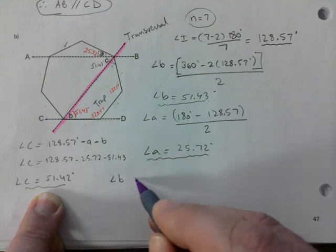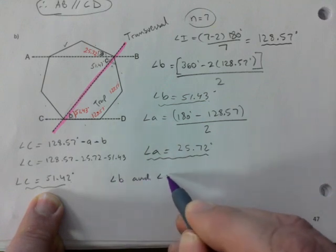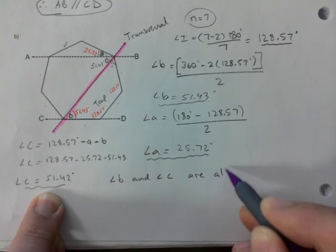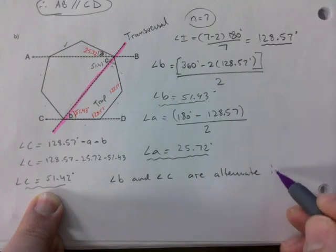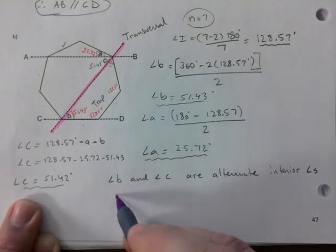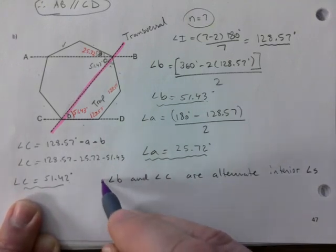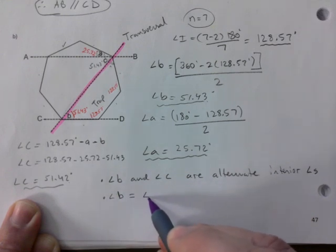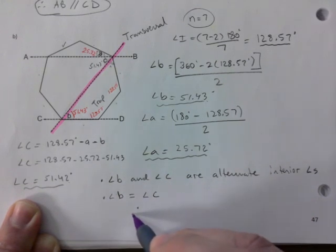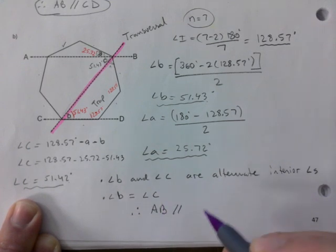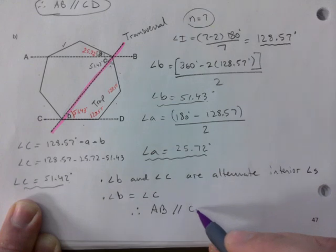So now I'm going to make my conclusion. Angle B and angle C are alternate interior angles. That's the first point. Angle B is equal to angle C. Therefore, lines AB, or segment AB, is parallel to segment CD.